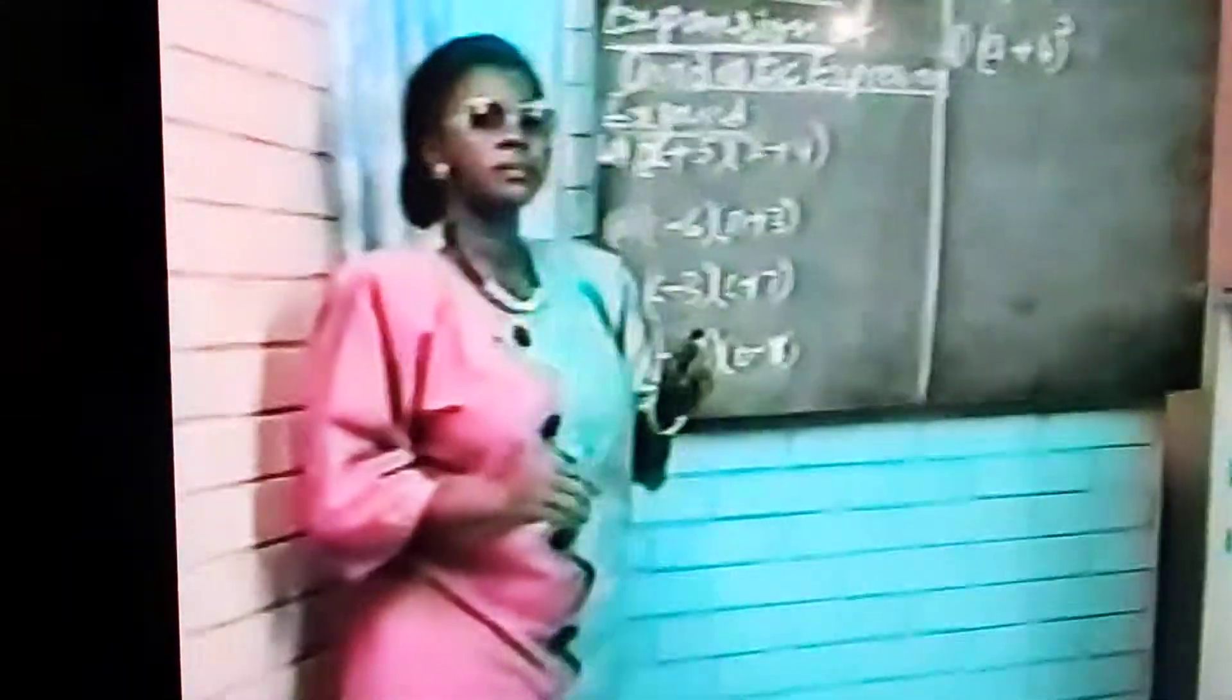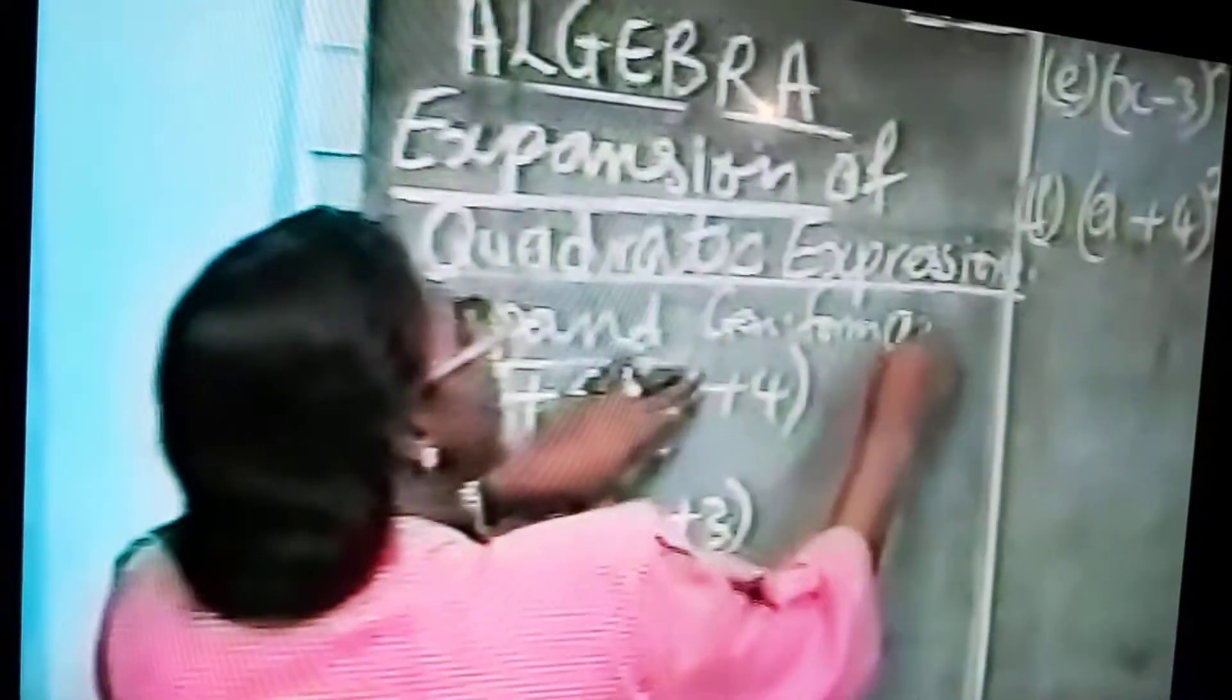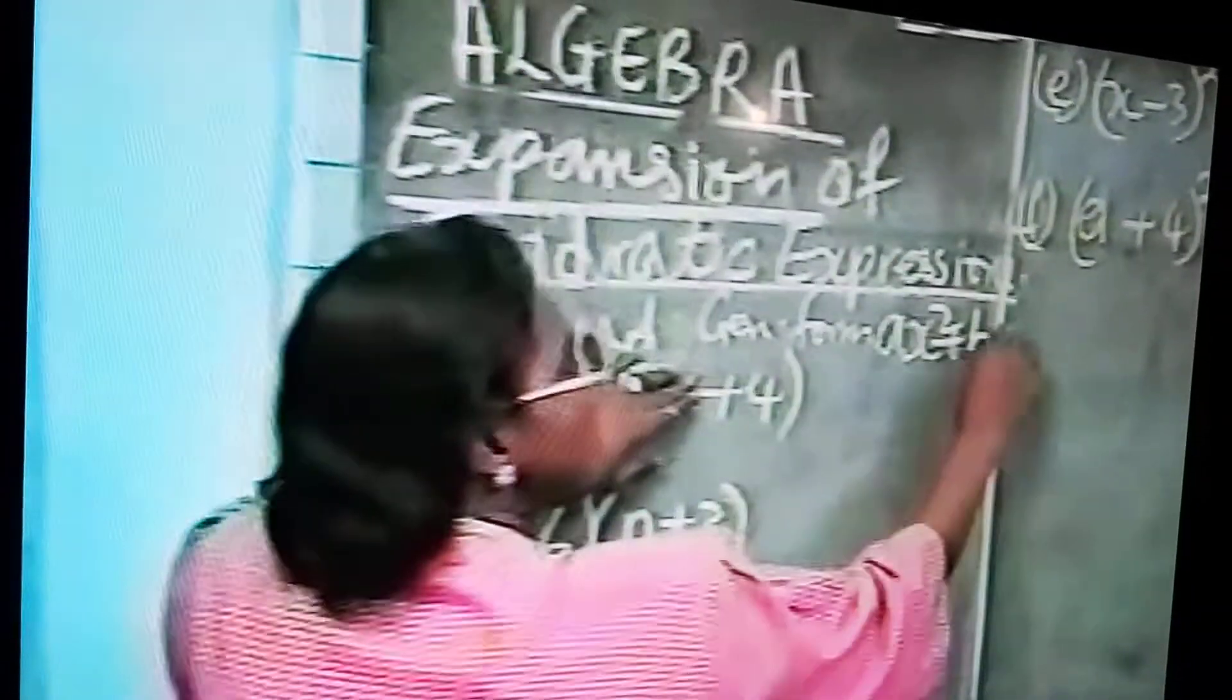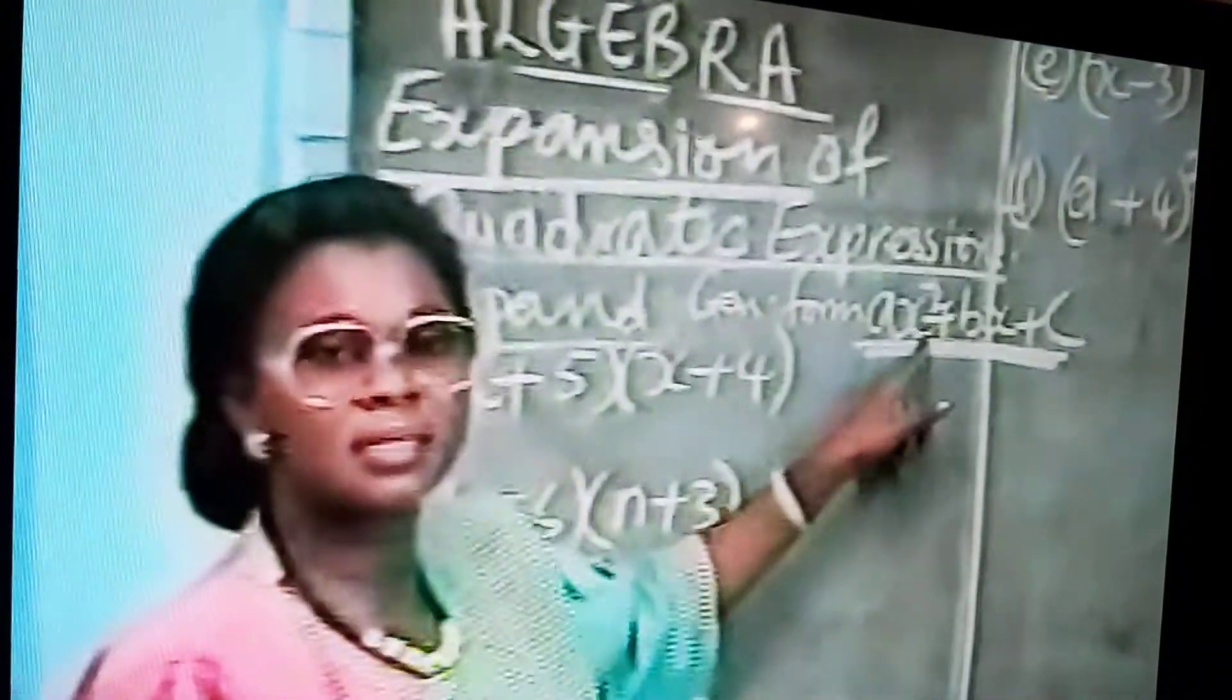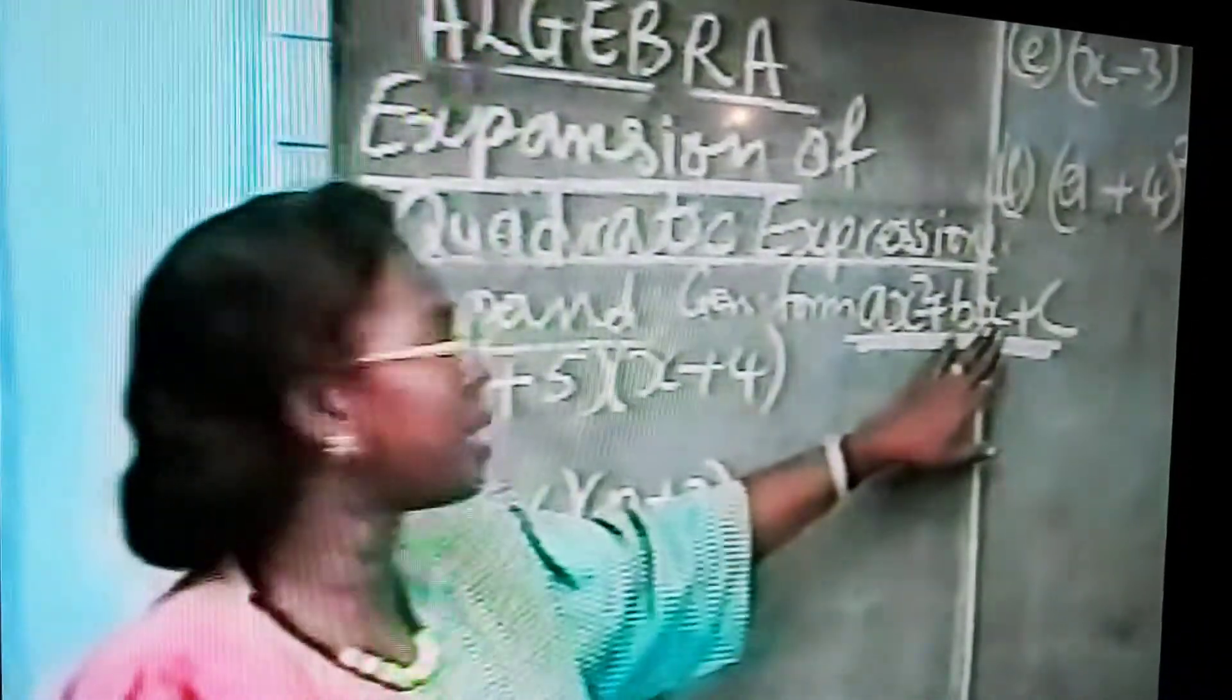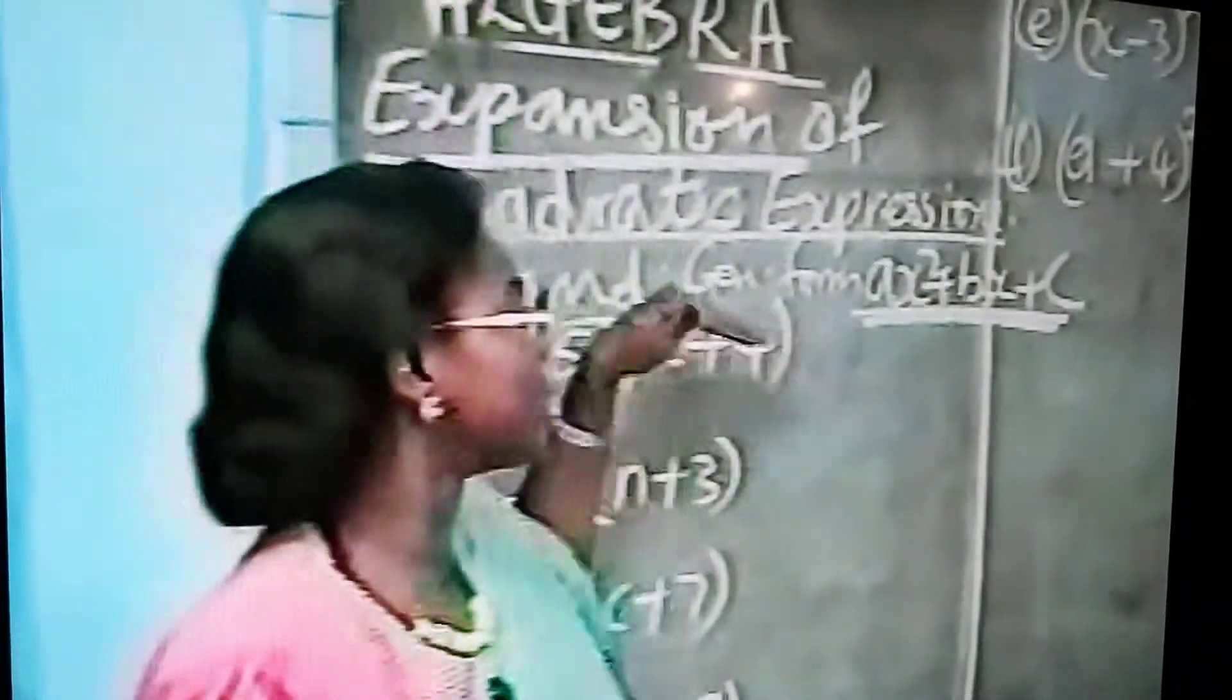The general form of a quadratic expression is ax squared plus bx plus c. That's the general form. You call the ax squared the first term or sometimes you call it the squared term. The bx is the middle term and the c is the constant. It is important to get your quadratic expression in this form.